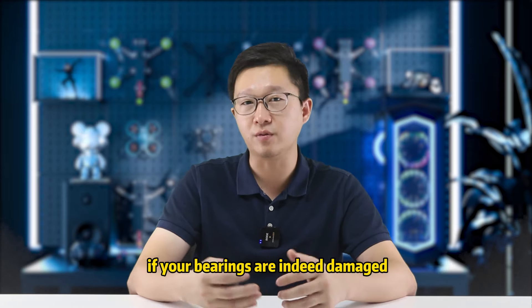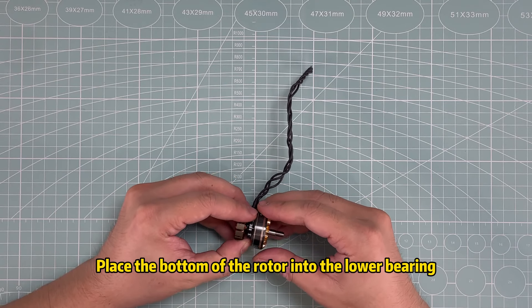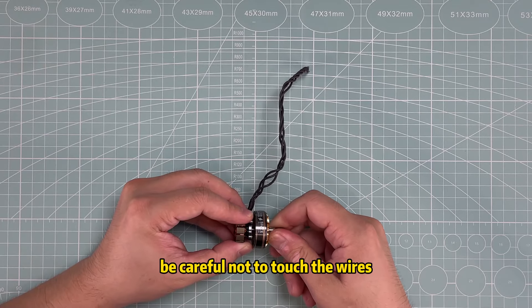Start by removing the rotor and inspect the two bearings on the stator. Place the bottom of the rotor into the lower bearings. Be careful not to touch the wires.